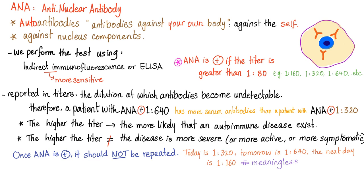In brief, ANA are antibodies against the nucleus. It's only positive if the titer is greater than 1:80 — for example, 1:160, 1:320, or 1:640 are positive, but 1:40 is negative. They are reported in titers. A patient with ANA positive at 1:640 has more serum antibodies than one at 1:320. The higher the titer, the more likely you have an autoimmune disease. But a higher titer does not mean the disease is more severe — it has nothing to do with disease activity or symptoms.